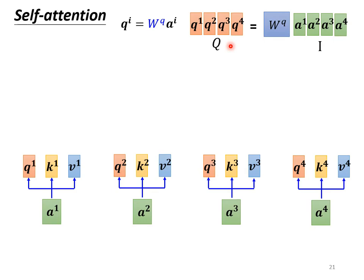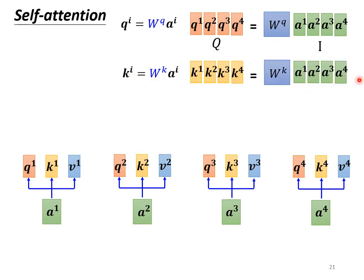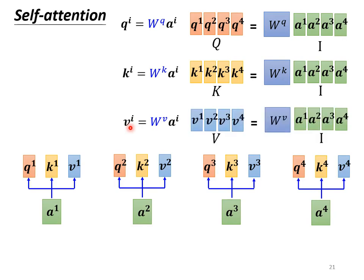The process for k and v is the same. Multiplying I by wk gives matrix K, whose four columns are k1 to k4. We can also calculate V the same way: V equals I times wv, and the four columns of matrix V correspond to v1 to v4. So we have three different matrices—wk, wq, and wv—in our model. By multiplying every vector a with those matrices, we obtain Q, K, and V.